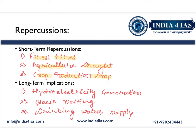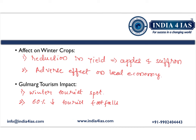The long-term implications include a decrease in hydroelectric power generation due to less water availability. Dry conditions also cause glacier melting in the Himalayan regions, affecting drinking water supply. Additionally, dry winter affects winter crops, causing a reduction in the yield of apples and saffron, adversely impacting the local economy of Jammu and Kashmir.